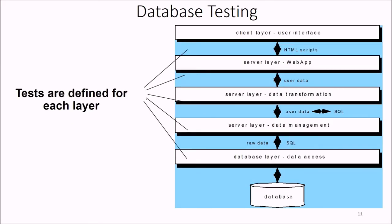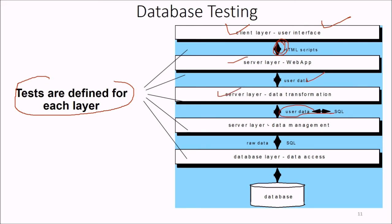In database testing, tests are defined for each layer. The client layer is the user interface with HTML scripts. The server layer handles the web app and user data. Another server layer handles data transformation, converting user data to SQL. Another server layer handles data management, converting raw data to SQL. And the database layer handles data access where the actual database resides.